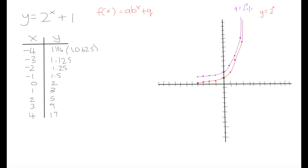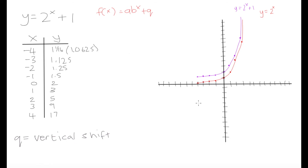In purple, this is y = 2^(x+1). We can notice that this purple graph looks very similar to our red graph, except the red graph has been shifted upwards. So q represents our vertical shift — q equals our vertical shift. This is similar to what we saw with hyperbolic equations. If q > 0, we shift upwards; if q < 0, we shift downwards.